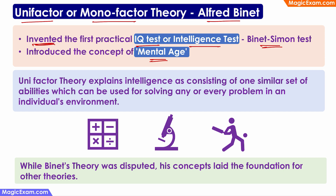The Uni-factor theory says that intelligence is one similar set of abilities which can be used in any field and can be used for solving any or every type of problem in the individual's environment.